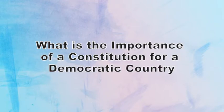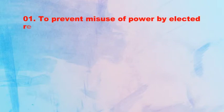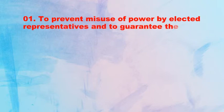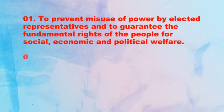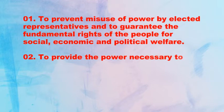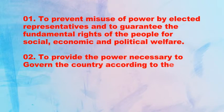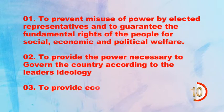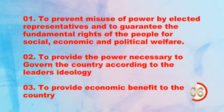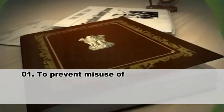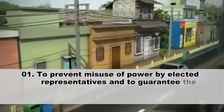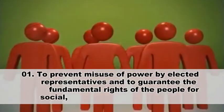Question 1: What is the importance of a Constitution for a democratic country? 1. To prevent misuse of power by elected representatives and to guarantee the fundamental rights of the people for social, economic and political welfare. 2. To provide the power necessary to govern the country according to the leader's ideology. 3. To provide economic benefit to the country. Answer: 1 — To prevent misuse of power by elected representatives and to guarantee the fundamental rights of the people for social, economic and political welfare.